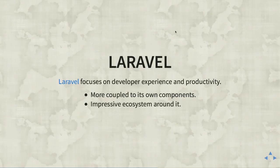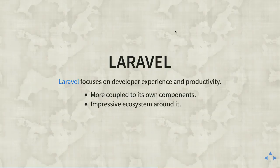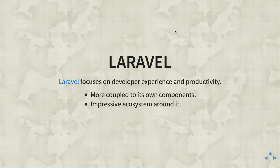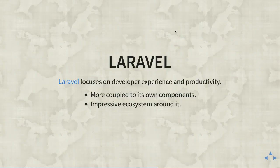Bucking the trend is Laravel — has everyone heard of it? Rather than focusing on technical design issues, it focuses on making developers productive with a minimal amount of code. As a result it's a bit more coupled to its own components, though Blade (its templating library) and Eloquent ORM (its database tool) can be pulled out separately. It has a very impressive ecosystem: Homestead to automate Vagrant, and even a service called Laravel Shift that will automatically make pull requests to upgrade your app from version 4.2 to 5.5.